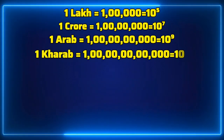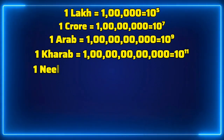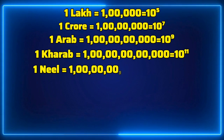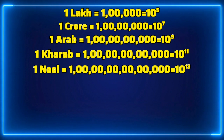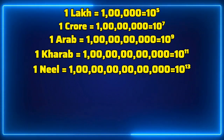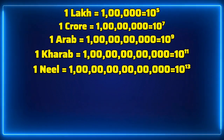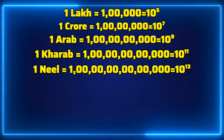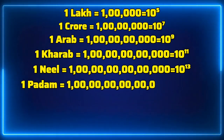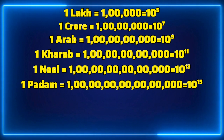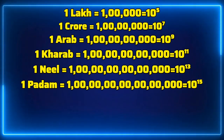After Arab, one Kharab has eleven zeros, that is 10 to the power 11. After Kharab, one Nil has thirteen zeros, that is 10 to the power 13. One Padma is equal to 10 to the power 15 — one followed by fifteen zeros.